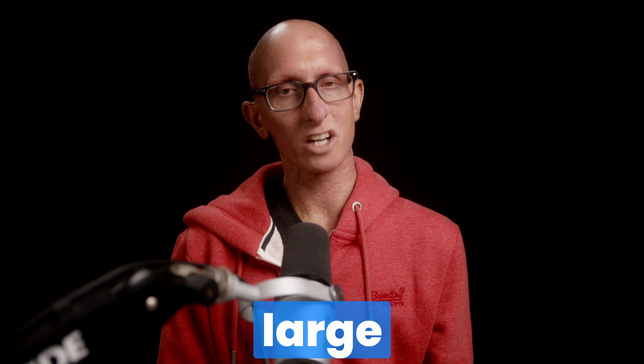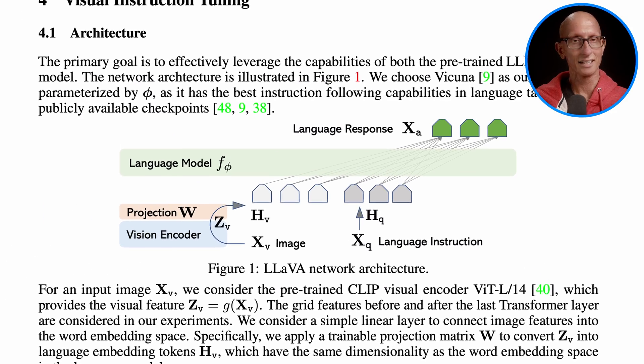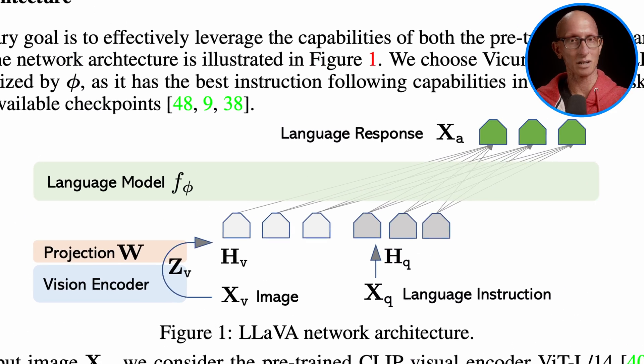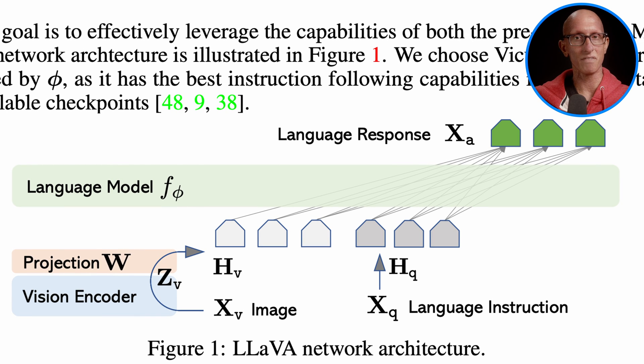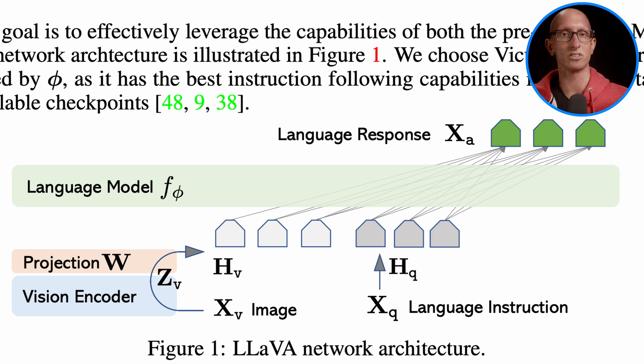Lava is a large multimodal model that we've covered a couple of times on the channel. Let's quickly go to the paper and remind ourselves about the architecture. At the top we have an underlying text-based language model, and beneath there's a vision encoder. On the initial Lava it was using Vicuna as the LLM and Clip as the visual encoder.